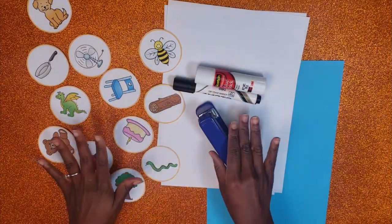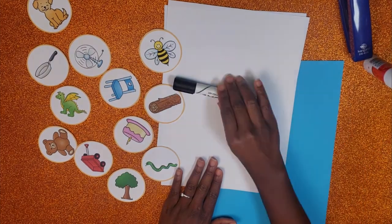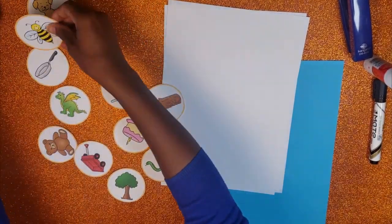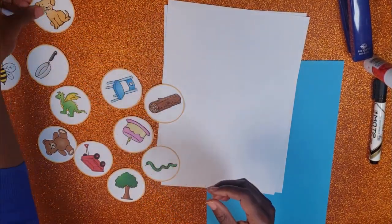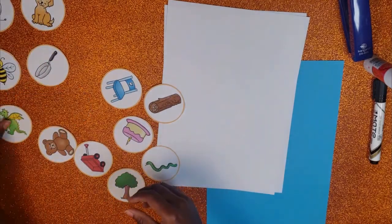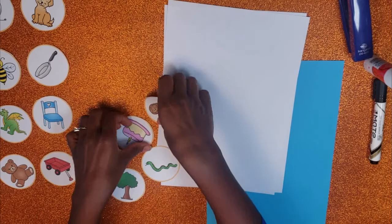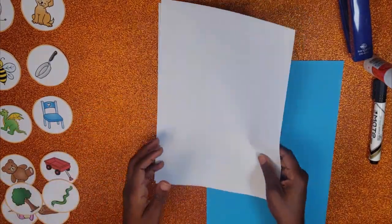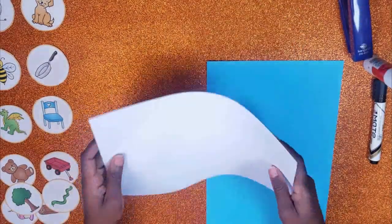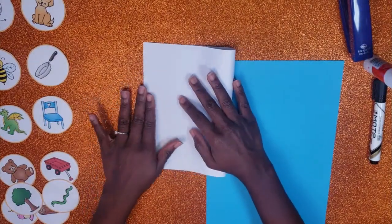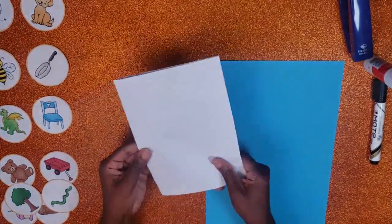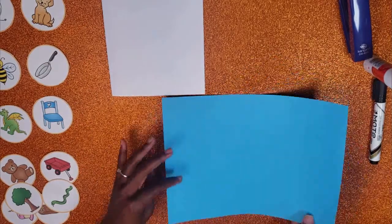Today we're going to be making a rhyming book. To make a rhyming book, you will need a couple of pieces of white paper, one piece of colored paper for the cover. You can use construction paper or just regular colored paper. You will also need a stapler, glue stick, something to write with, and pictures of rhyming pairs. You can grab a free copy of the ones I'm using at the link below.